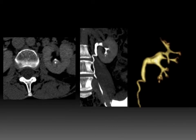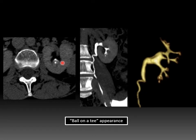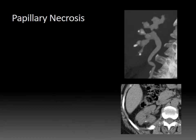Here is a different case of papillary necrosis involving a single pyramid. You can see it has that ball and a T appearance — upside down, but it still applies. The tip of the medullary pyramid has become ischemic and filled with contrast as it left a void. You can see it again on the coronal MIP image and on the 3D volume-rendered reformat. This is a different case of multifocal papillary necrosis, showing the multifocal ball and a T appearance on the coronal MIP excretory phase image. On the non-contrast image, you can identify extensive renal parenchymal scarring, which often coexists with severe papillary necrosis.